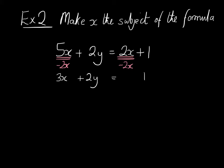And now I'm exactly in the same place as before. I want to make x on its own. So I'm going to subtract 2y off both sides. And I'm going to get that 3x is therefore 1 subtract 2y. And I'm going to divide both sides by 3 because I want 1x. So therefore x is 1 subtract 2y, all divided by 3. So x is now the subject of the formula.